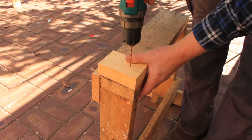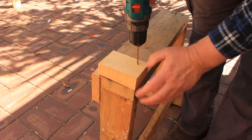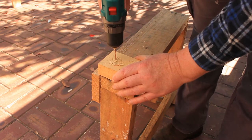Start by attaching a block of wood to the end of one of your saw stools. We need to add this so that we can use the tenon saw on the saw stool.